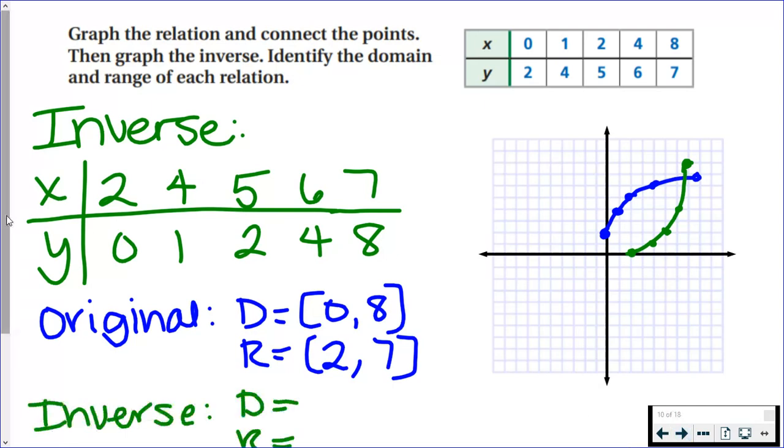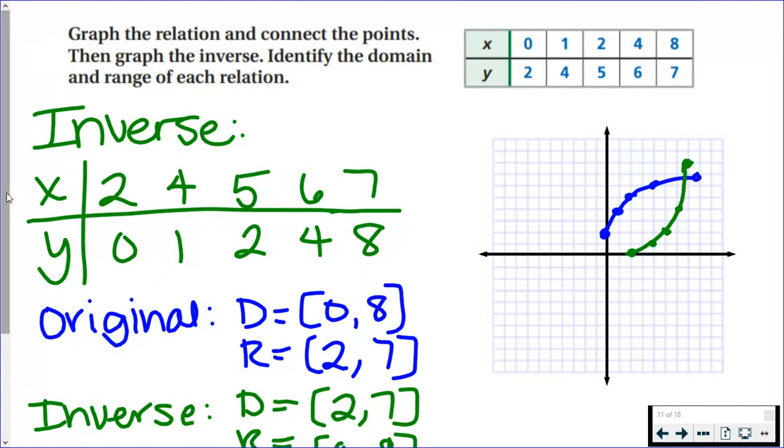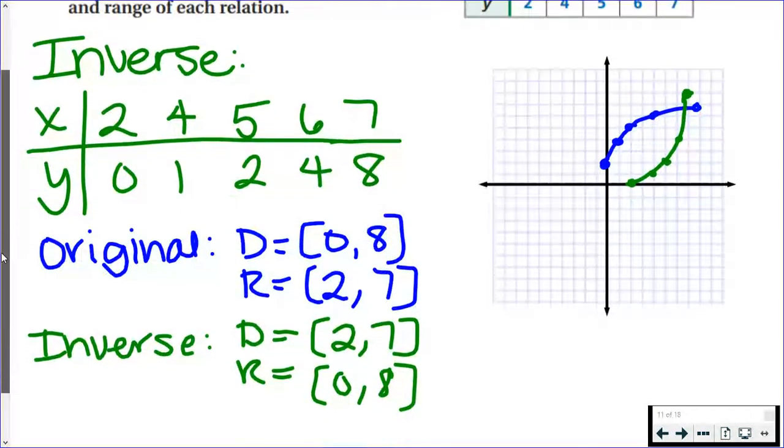If you look at the green now, from 2 to 7, those are my x values. You can see that's just the range of the original.